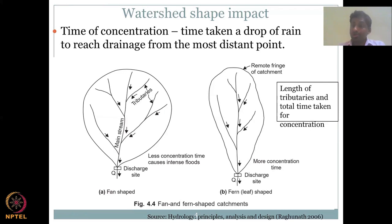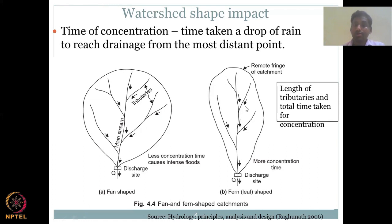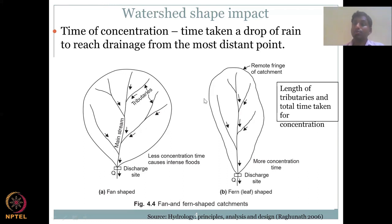Length of tributaries and total time of concentration have also been discussed. The length of stream networks plays a vital role: if tributaries are very short, water quickly enters the network and causes floods. If the tributaries are long, water droplets take a longer time to reach the outlet.